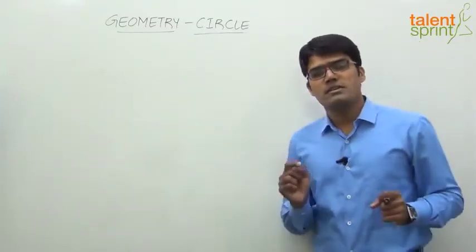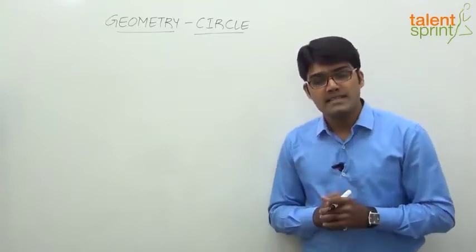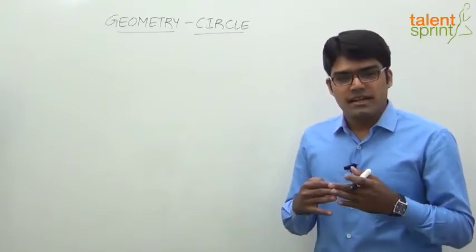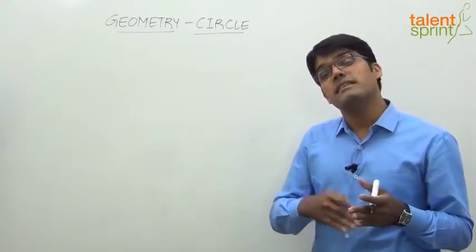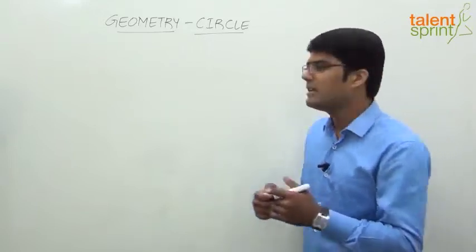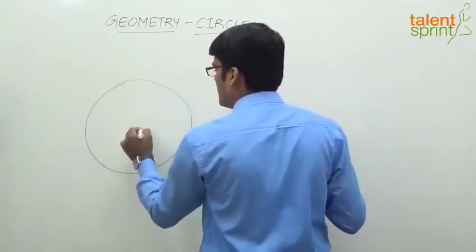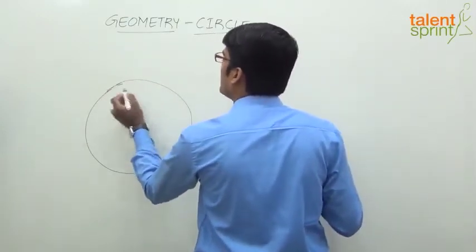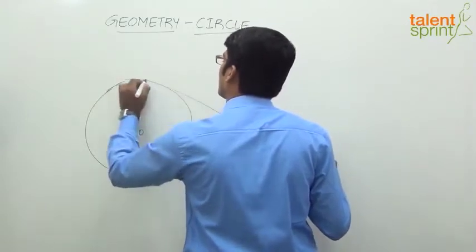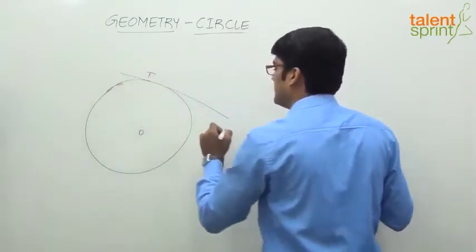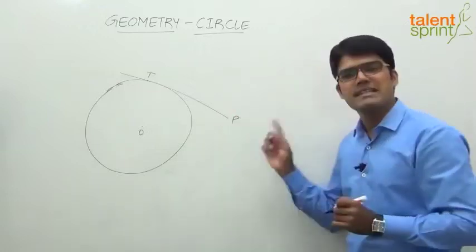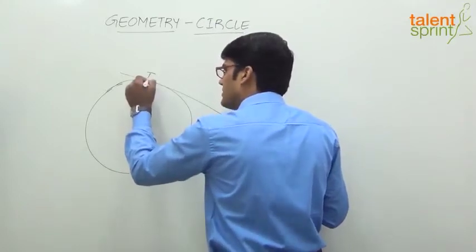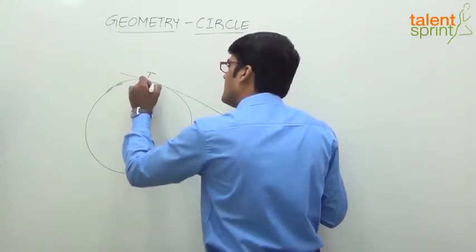The first and very important property with respect to tangent is that the angle made by a tangent at the point of contact with the radius through that point of contact is always 90 degrees. For example, take a circle with center O and draw a tangent. Let this be the tangent, T is the point of contact, and PT is the tangent. From the center, when you draw a radius through that point of contact, it will form an angle.